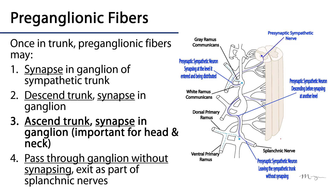Once in the trunk, those preganglionic fibers can do one of four things. They can immediately synapse and then return back to the VPR via the gray rami communicantes, which will serve the VPR and move back to the dorsal primary ramus as well — so they synapse and get right back to the spinal nerve via gray rami communicantes.